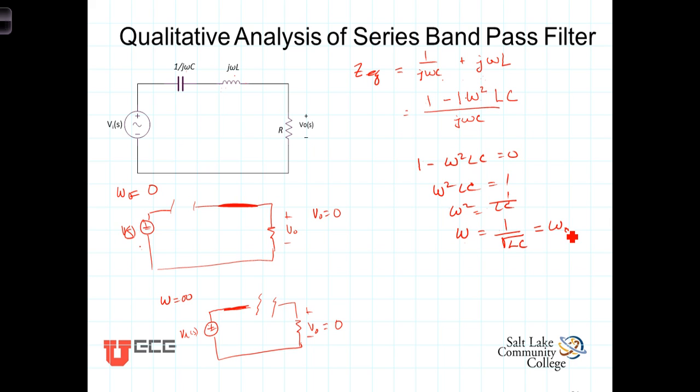Now, that's the same thing as the natural frequency that we ran into back when we were doing classical differential equation analysis of series RLC circuits. And you'll recall back then that natural frequency, or the resonant frequency, was in fact 1 over the square root of LC.